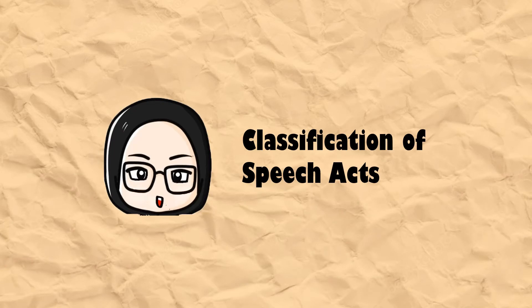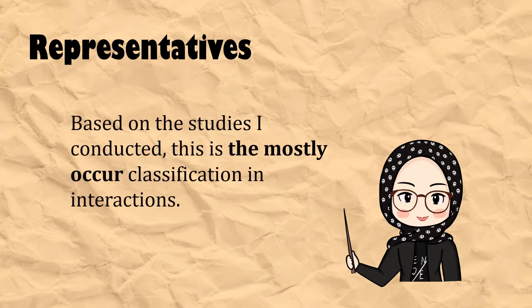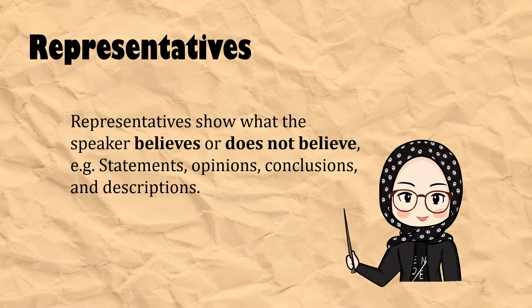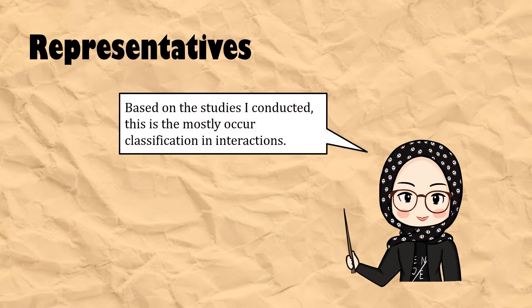Now that you know the IFITs, I'm going to elaborate the classifications of speech acts. There are five classifications of speech acts according to Searle. The first one is representatives. Based on my research, this is the classification that often occurs in any interactions. Representatives are kinds of speech acts that state what the speaker believes to be the case or not — they show what the speaker believes or does not believe. My previous statement, which claimed that representatives often occurred in any interactions, is one example of a representative speech act.